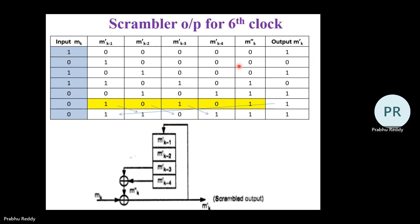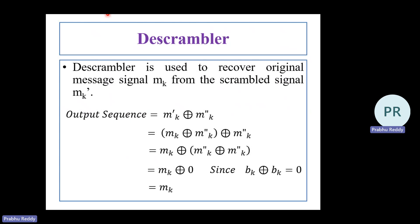The mk-dash is the scrambled output. For seven input bits, the output is also seven scrambled bits. Now the question is how to de-scramble. The de-scrambler should give back the original bit sequence. We assume the output equals mk-dash XOR mk-double-dash.